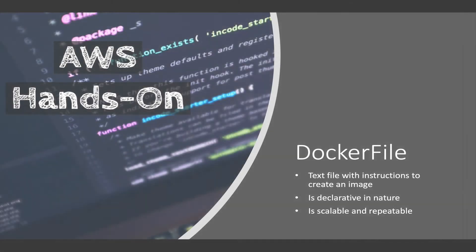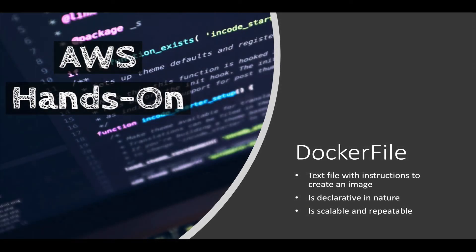Welcome back to the channel. In this video I'm going to show you how to create a Docker image using a Dockerfile. In the last video, the method I showed you was to create a Docker image out of a container, but that method is not very scalable or repeatable and is actually prone to errors. That is good for when you're testing something, but when you want to actually deploy on a large scale and create images in a repeatable manner.